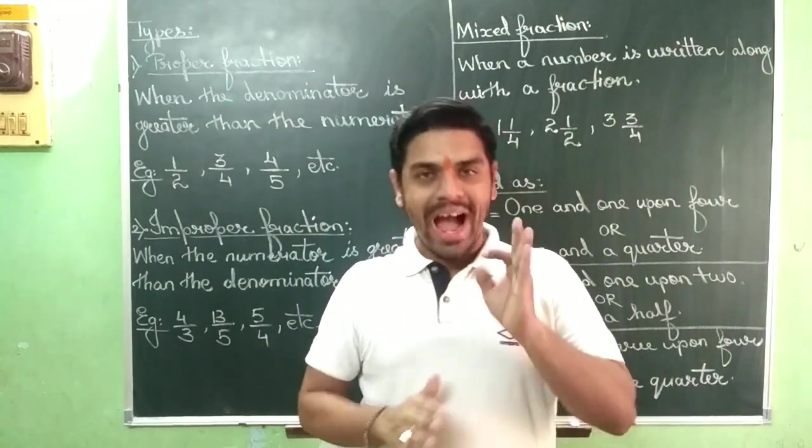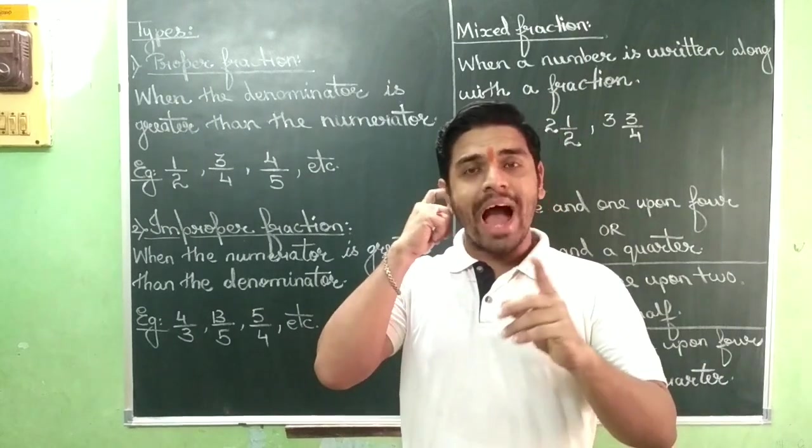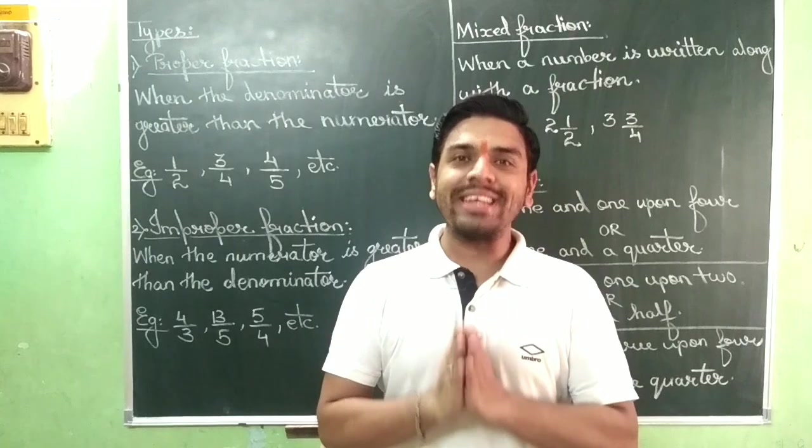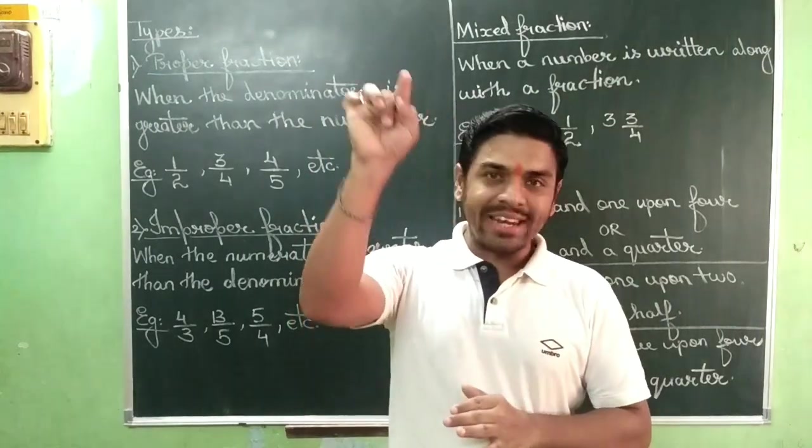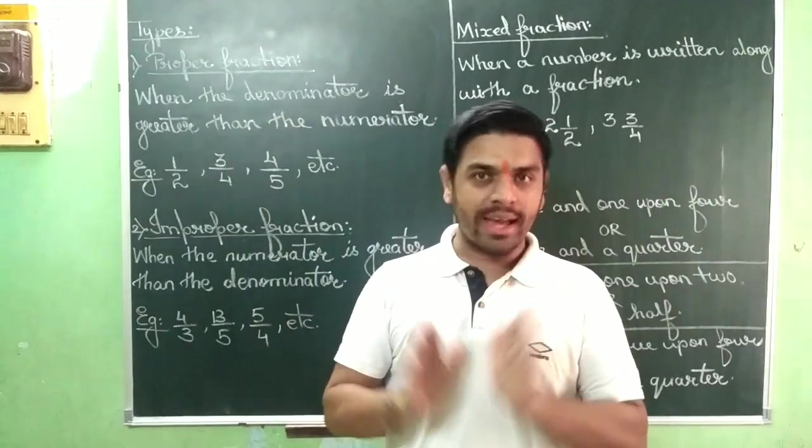For example, if you have a test out of 10 marks and you score 9 marks, what does your teacher do? You write 9, and underneath write 10. Correct?